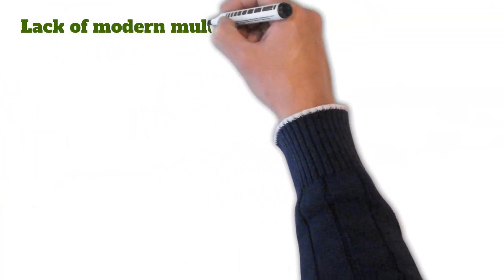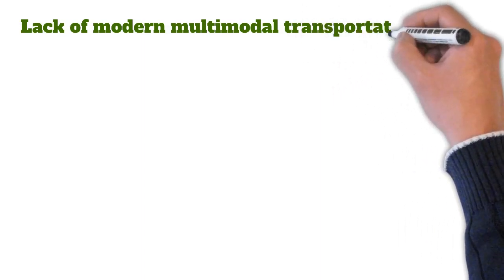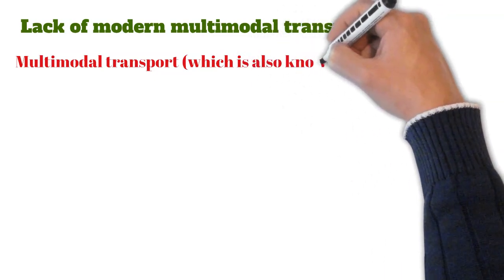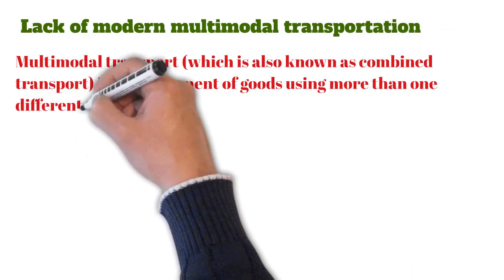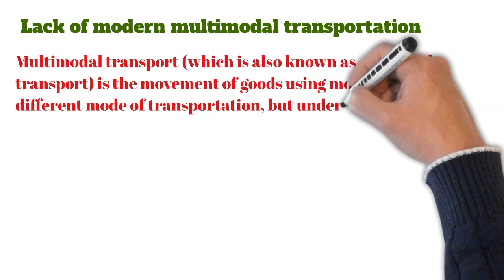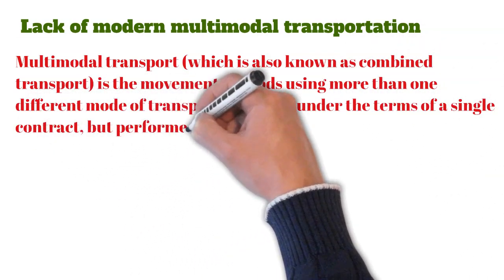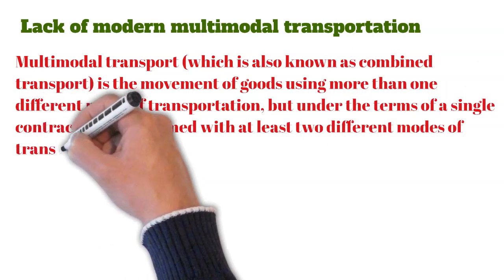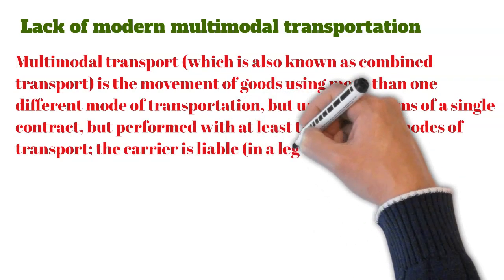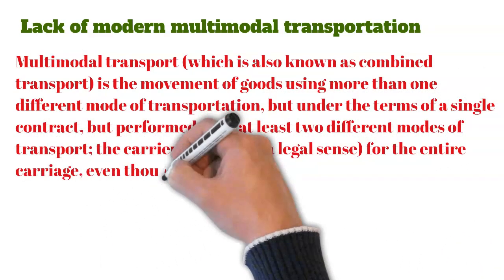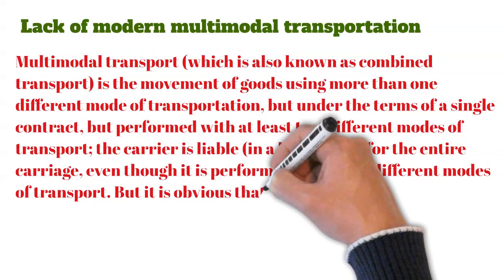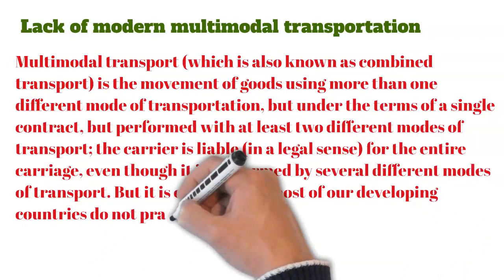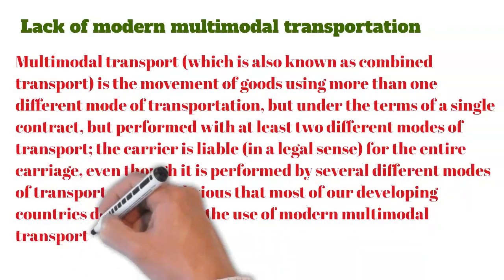Another problem is lack of modern multi-modal transportation. As discussed in our last class, multi-modal transportation — also known as combined transport — is the movement of goods using more than one mode of transportation under the terms of a single contract, performed with at least two different modes. The carrier is liable for the entire carriage. Most developing countries do not practice multi-modal transportation, which could help solve transportation problems.